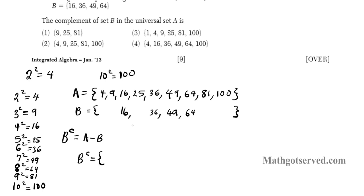So B complement, if we look at these two, we can simply determine what B complement are. What are the elements in A that are not in B? Let's cross out the elements that are in both of them, that are in the intersection. So we see if we subtract B from A, these cancel out because they are in both sets. So the complement of set B in the universal set A are the elements you have left. So they are 4, 9, 25, 81, and 100.